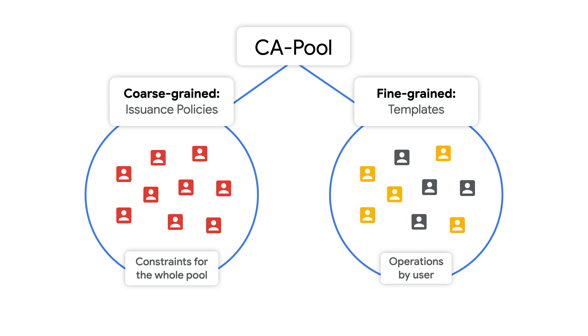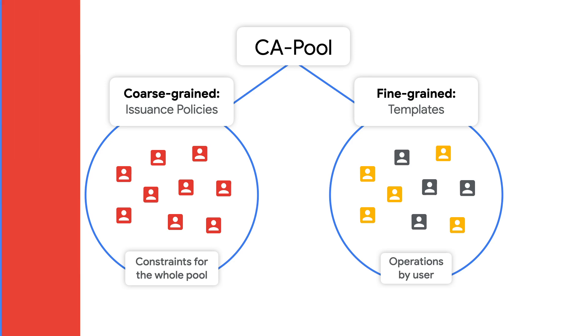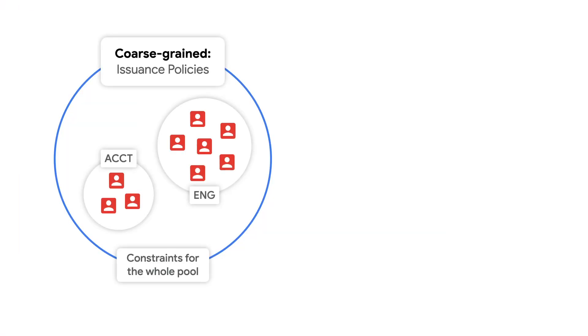Think of fine-grained policies as a way to segment based on conditions and user groups. Many solutions today don't discriminate between fine and coarse-grained, which means that every department or service that needs a certificate has to use the issuance policy that has been assigned to the whole company or service. For example, policies applied to employees in accounting may be different from engineers working in prod, but the same CA serves both of them.